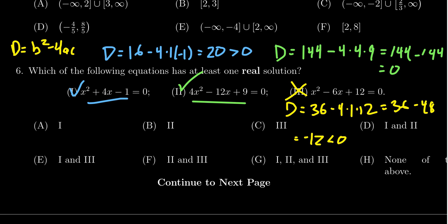Therefore, since 1 and 2 have 2 and 1 solutions, respectively, and 3 does not, we see the correct answer would be choice D. 1 and 2 have real solutions. Number 3 has no real solutions.